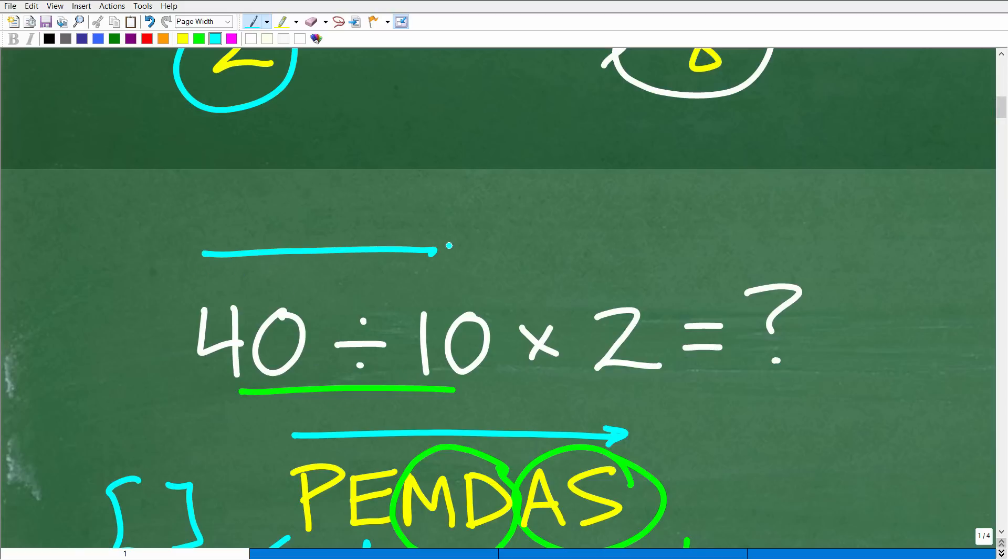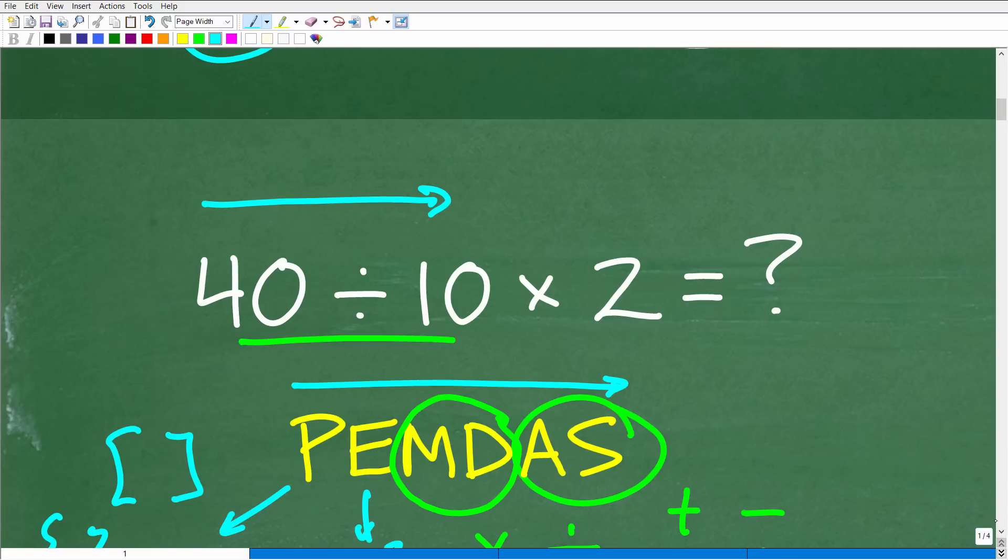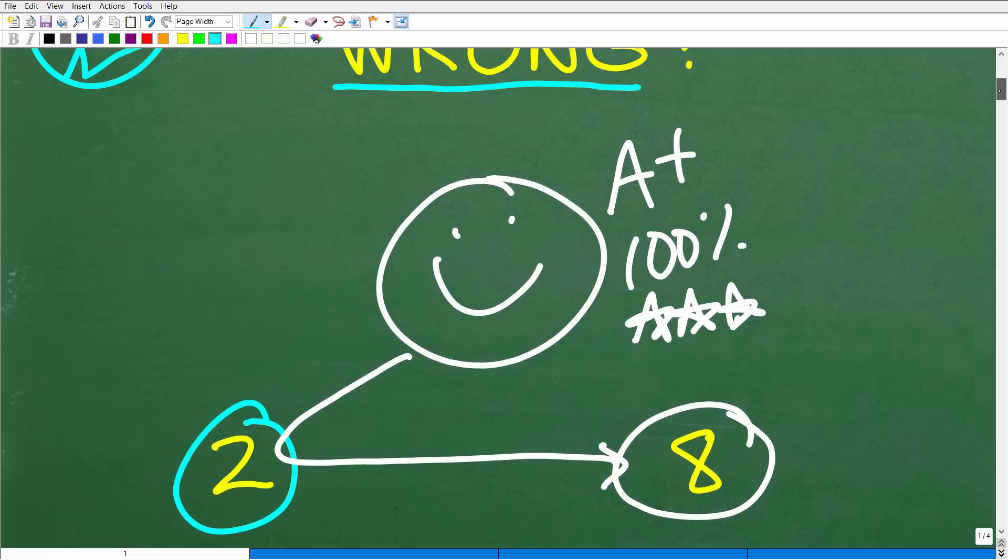And, you know, maybe you just kind of did it and you kind of lucked out. And that's, you know, that's okay, but we don't want to get lucky in math, right? What we want to do is have absolute certainty in what we're doing.